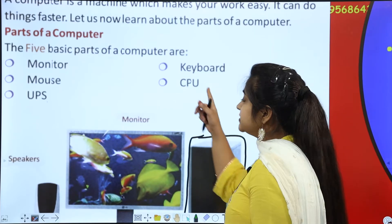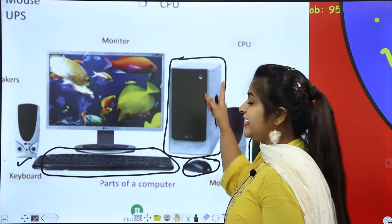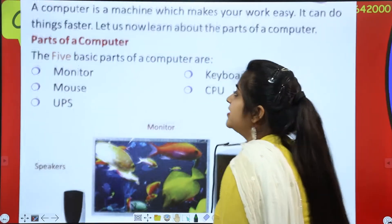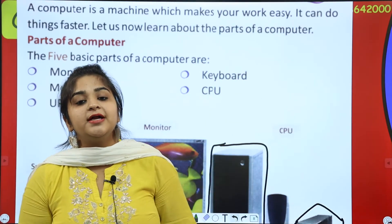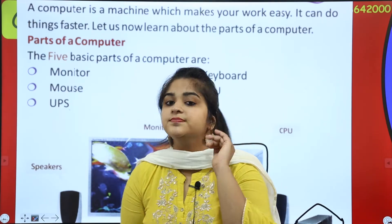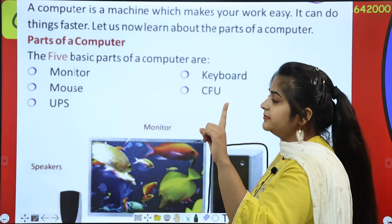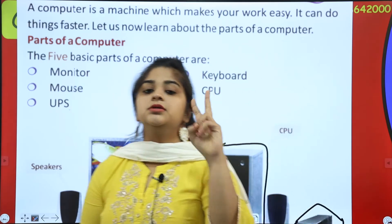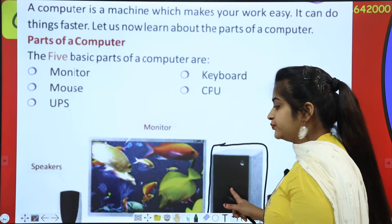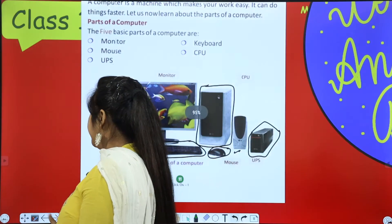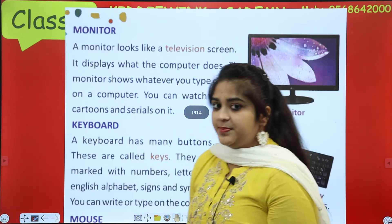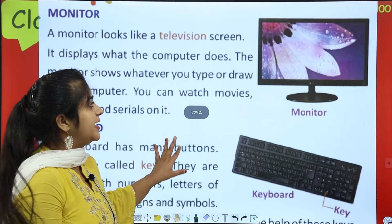Then comes your CPU. The big box is the CPU. So how many parts of a computer are there? There are five parts of a computer: Monitor, Mouse, UPS, Keyboard, and CPU.